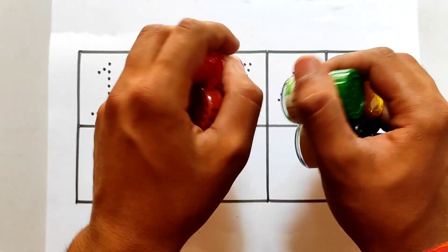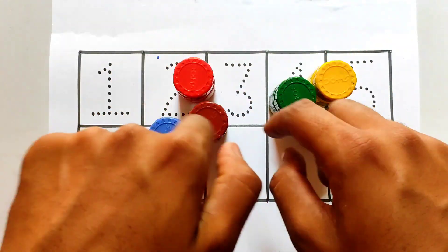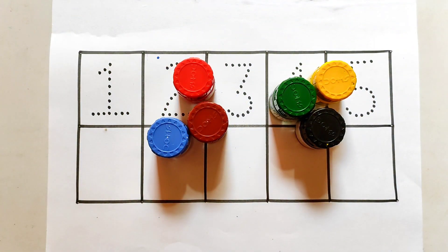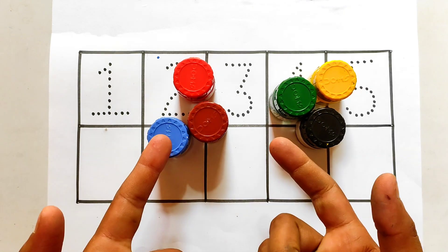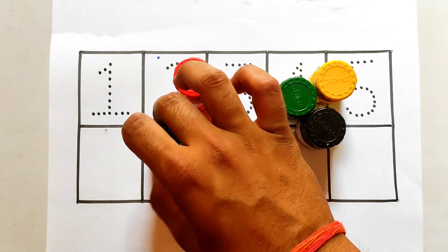So kids, these are the colors. We are gonna use these colors to draw these numbers. So first of all, be aware about the color's name.